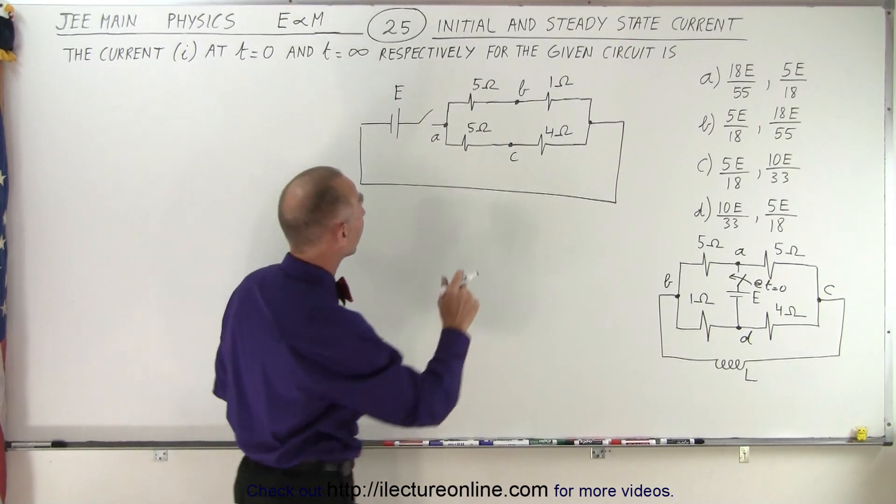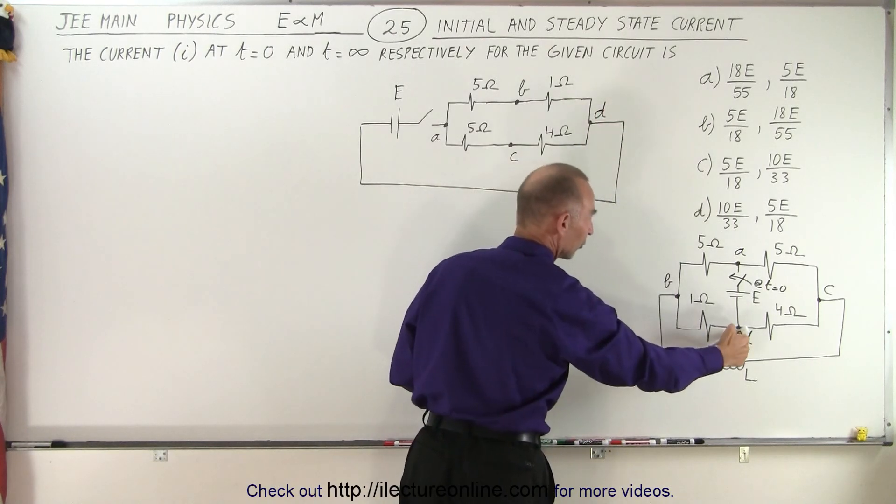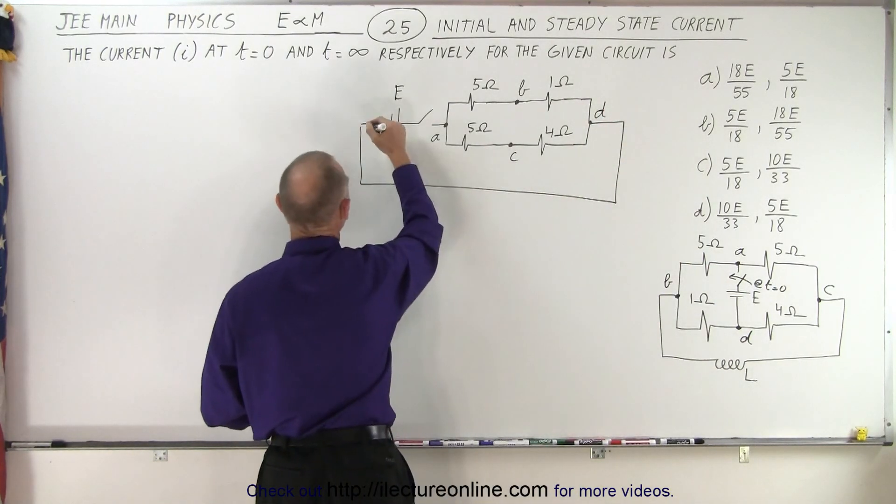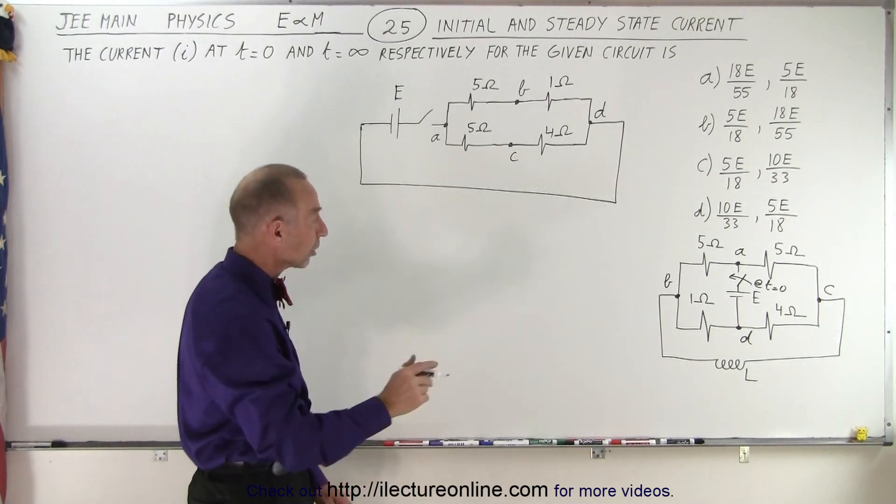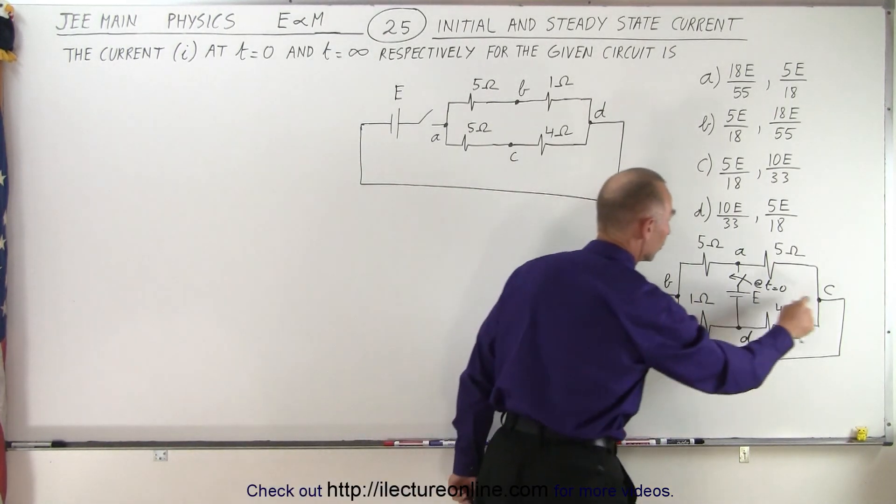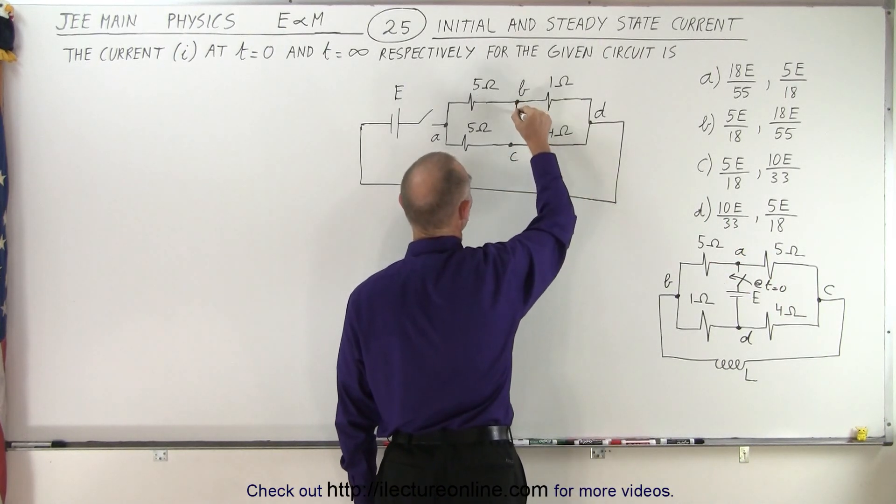Hmm? Oh yeah, I missed the D, I have to put D there. And then of course we come back to E, so we come back around like this. Of course we haven't drawn the inductor yet. The inductor goes from B to C, so we have B here, we have C here, so here's the inductor.